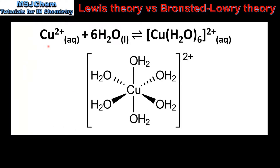In our final example we look at the reaction between a copper 2+ ion and 6 water molecules. The product of the reaction is a complex ion. Each water molecule, known as a ligand, donates a lone pair of electrons to the central metal ion, so the ligands are acting as Lewis bases. The copper 2+ ion accepts the lone pairs of electrons, therefore it is acting as a Lewis acid. It is not possible to describe this reaction in terms of the Bronsted-Lowry theory, because the reaction does not involve the transfer of protons.